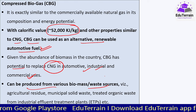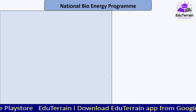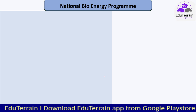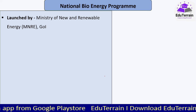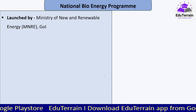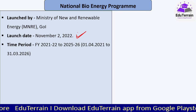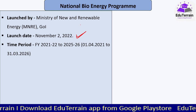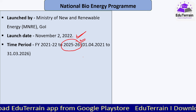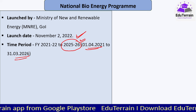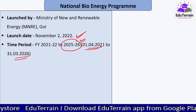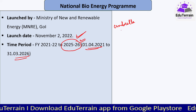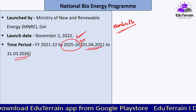Coming to the National Bioenergy Program: it is launched by the Ministry of New and Renewable Energy, Government of India. It was launched on November 2nd, 2022, for a time period of five years, running from April 1, 2021 to March 31, 2026. Various components under this program had been launched earlier but have now been brought under one umbrella to monitor progress effectively.